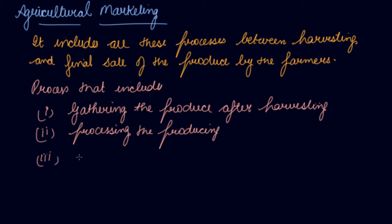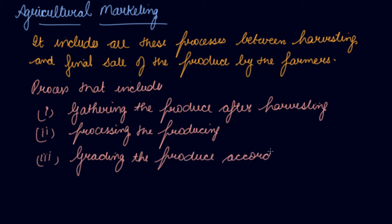Third is grading the produce according to its quality. For example, we have rice at 20 rupees per kg, then 40 rupees per kg, then 60, then 100, and premium rice at 200 rupees per kg. These are the various qualities of rice being produced, and you grade your produce accordingly.